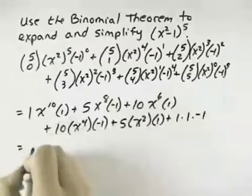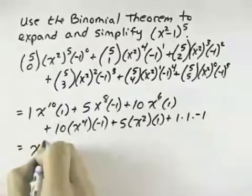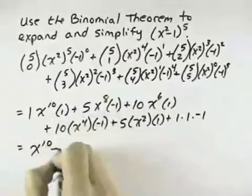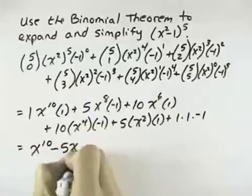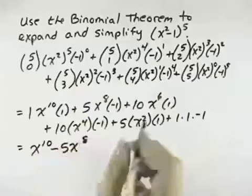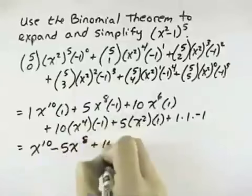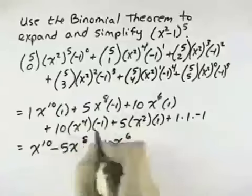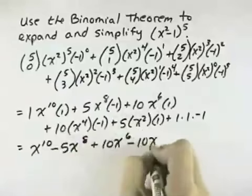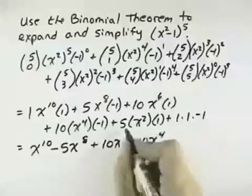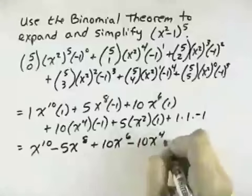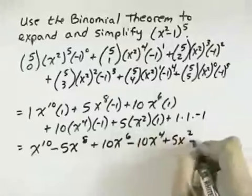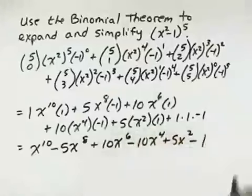So 1 times 1 times x to the tenth is x to the tenth. Negative 1 times 5 gives negative 5x to the eighth. 10 times 1 is plus 10x to the sixth. 10 times negative 1 is minus 10x to the fourth. 5 times 1 is plus 5x squared. 1 times 1 times negative 1 is minus 1.